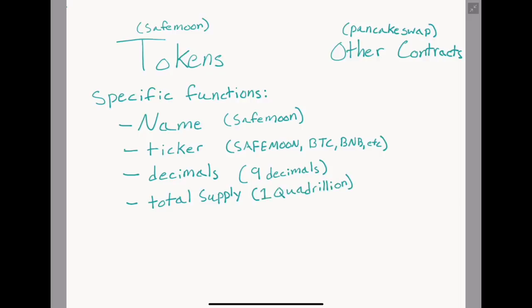We need the total supply of the token - how many tokens are there in existence. For SafeMoon this would be one quadrillion. Then we need two functions. One of these is balance of, which returns the balance of SafeMoon for instance of any address you give it. This is how wallet applications show you the number of tokens you own. They call this function and pass in your public key, your receiving address, as an input.